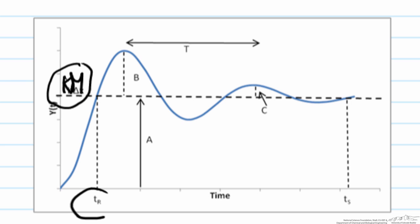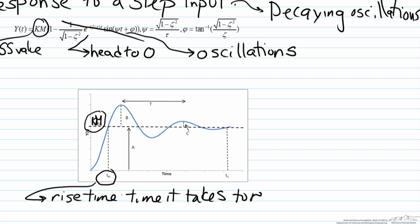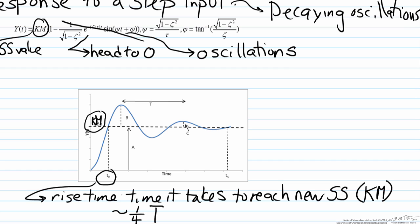We will start by looking at tr, which represents the rise time. The rise time represents the time it takes to reach the new steady state, which will be km for a step increase. This rise time is approximated as one quarter of the period. The period T is defined in the typical sense as the time it takes to go from peak to peak, and can be expressed as 2 pi tau over the square root of 1 minus zeta squared.